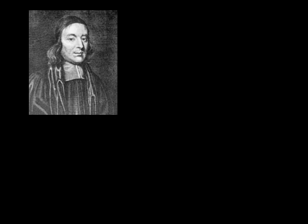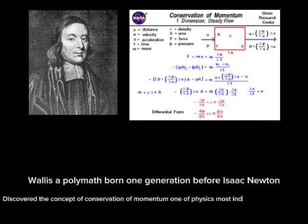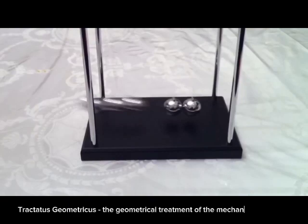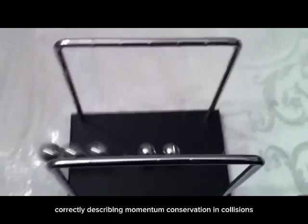An interesting fact about John Wallis is that his books are considered the first English textbooks that dealt with more than just math — they covered the history of mathematics as well. Wallis, a polymath born one generation before Isaac Newton, discovered the concept of conservation of momentum, one of physics' most indispensable concepts. In 1670 and 1671, Wallis published in three parts Mechanica Sive de Motu, Tractatus Geometricus — the geometrical treatment of the mechanics of motion — correctly describing momentum conservation and collisions.